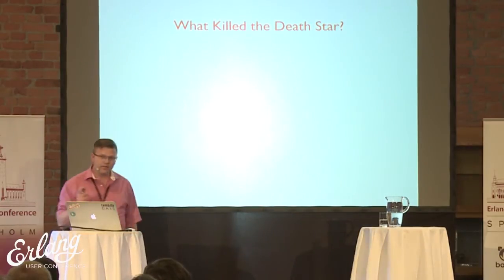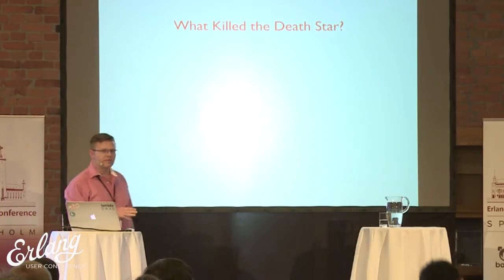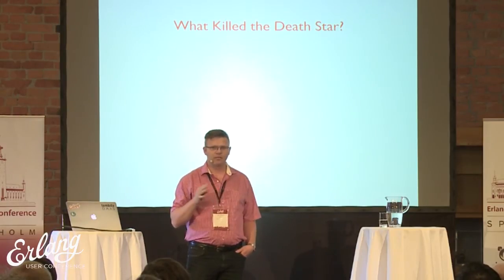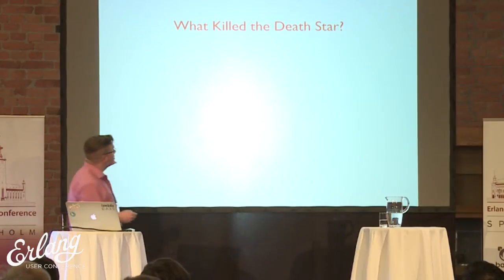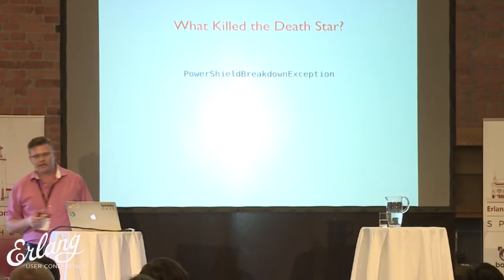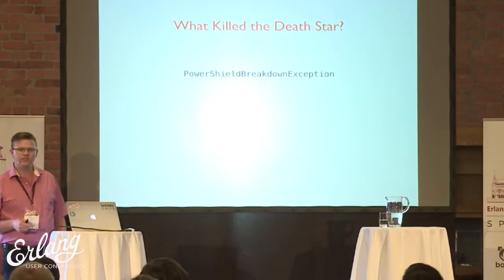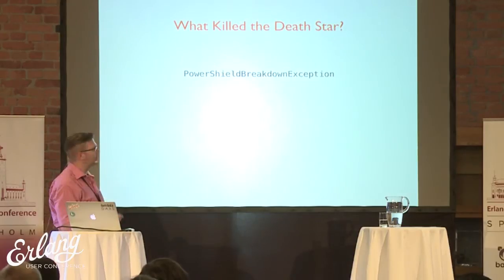So the question is, what actually killed the Death Star? Before I get into this, I'm going to say a few things that are derogatory about Java and Java programmers — I apologize for that up front, it's to make a point. They are still good people, but they use Java. Was it the power shield breakdown exception? Well, they had that exception thrown, but they were able to fire a lot of things at the incoming flights anyway — they had some defensive mechanisms. So it wasn't really that one that killed them. Was it then the surface-with-alleys design exception? They have these alleys leading to critical points where you can fly in — stupid design. But no, that's not what killed them.